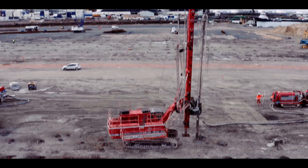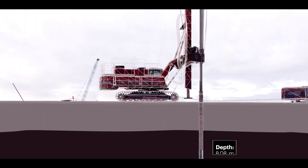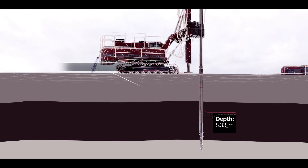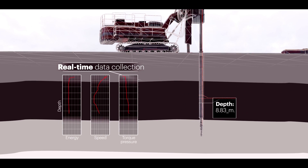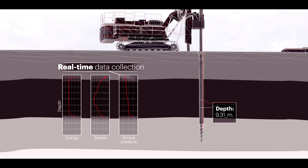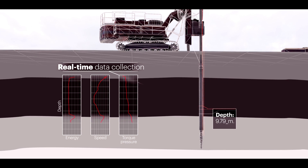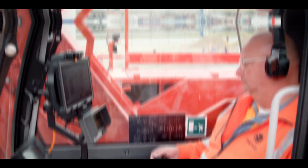Omnibox collects valuable data in real time using multiple sensors installed on the equipment. This information is combined with innovative algorithms to better evaluate and visualize the ground conditions.